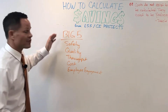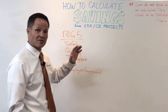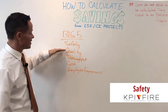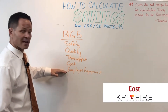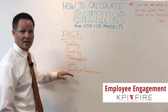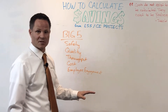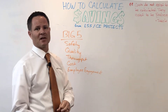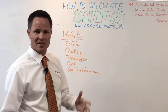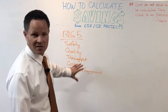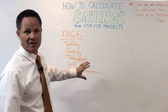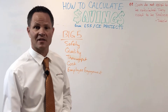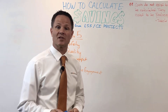If you remember my video on the big five metrics or KPIs you should be tracking every day, we have safety, quality, throughput, cost, and employee engagement. There are other KPIs that are important as well — customer satisfaction, on-time delivery — but those are all functions of these big five. I'll show you how to calculate the savings for each one.